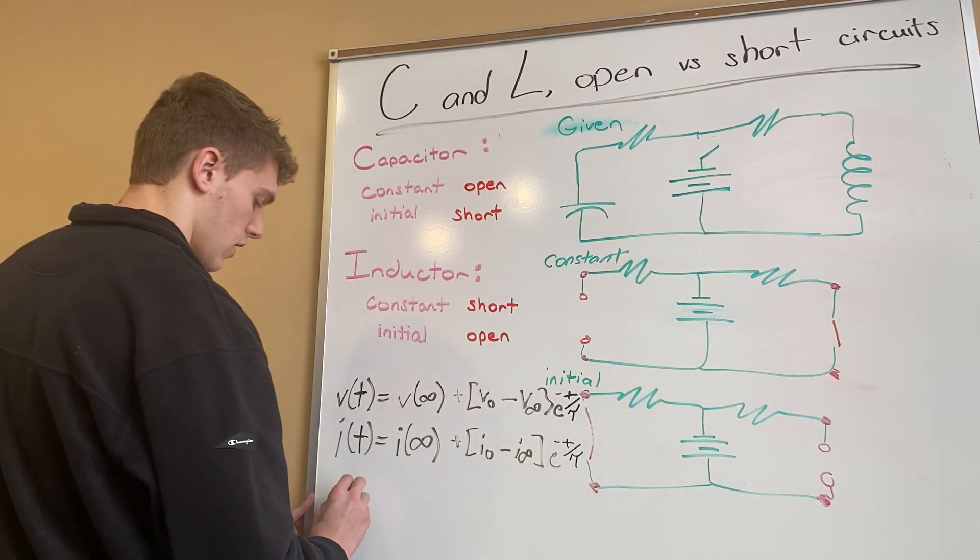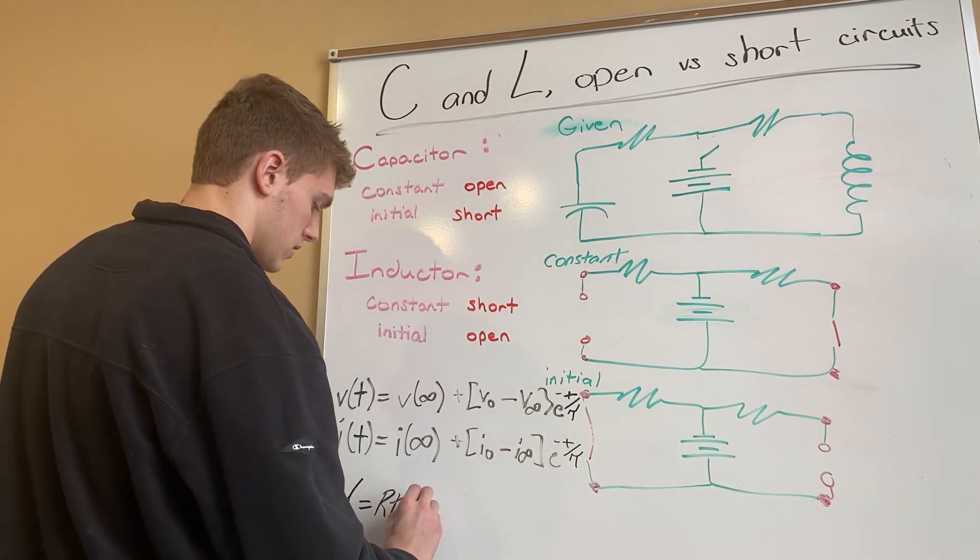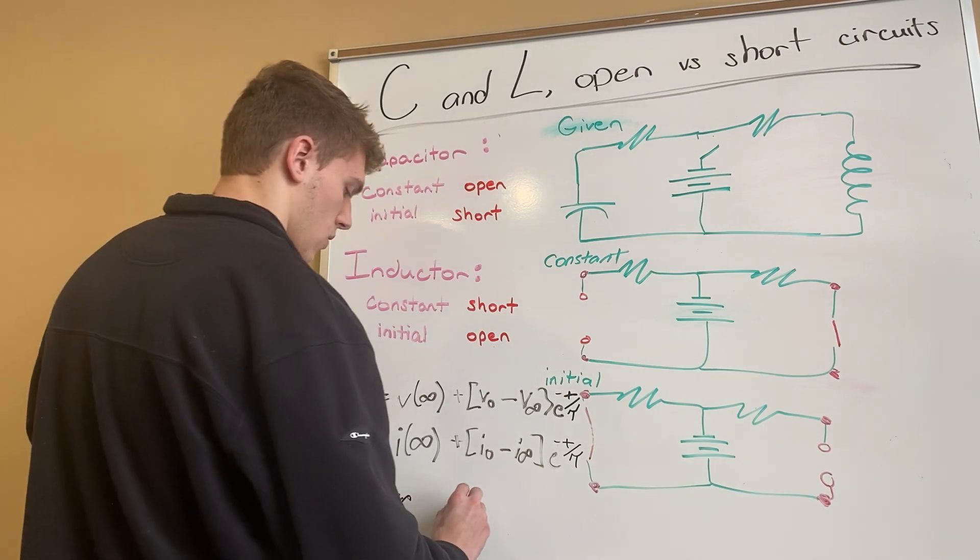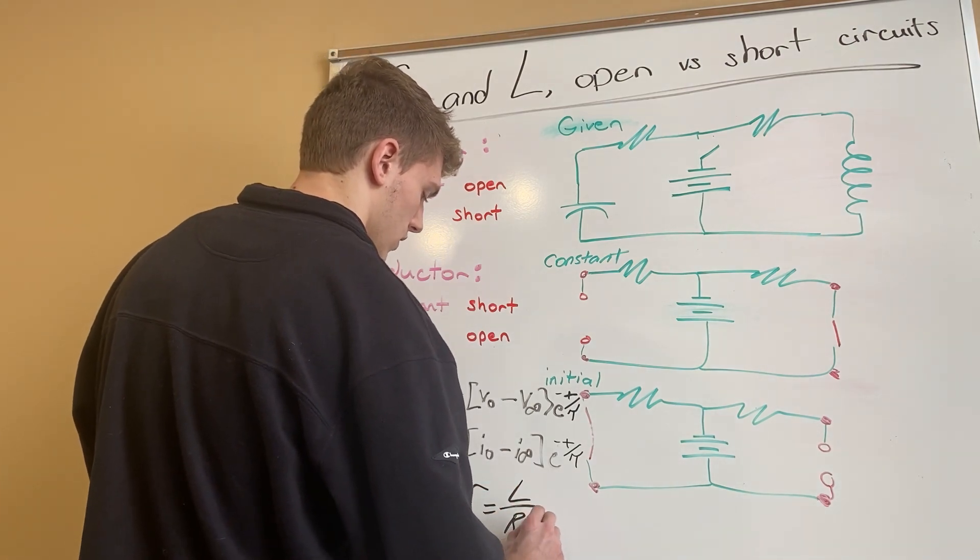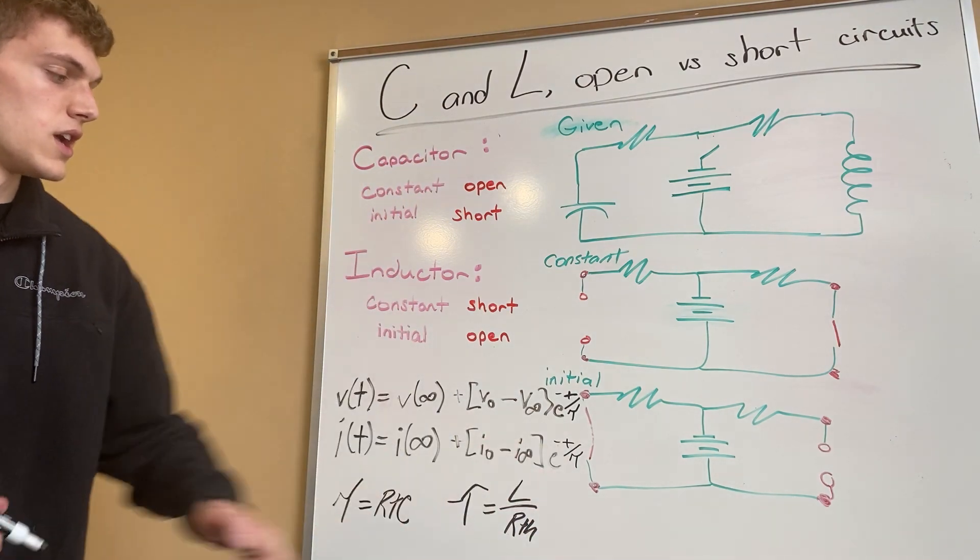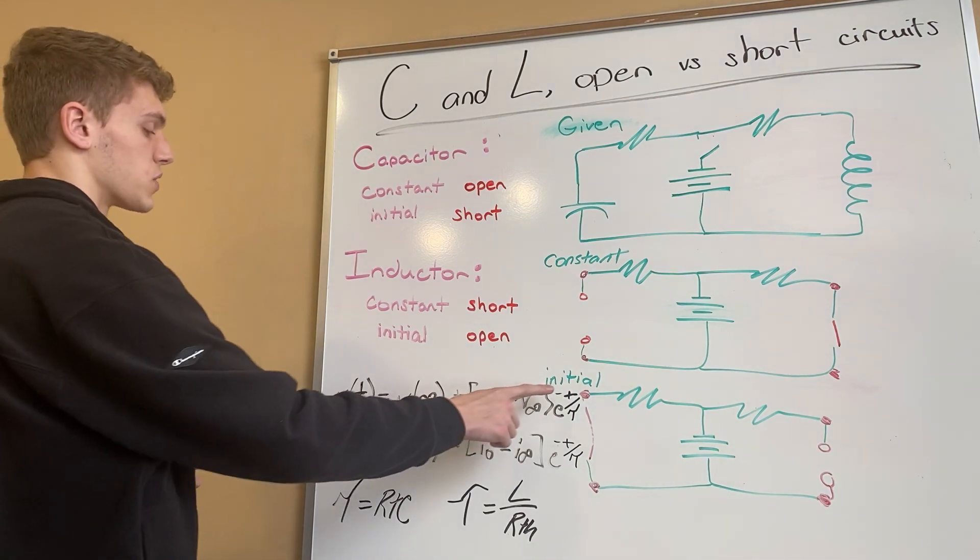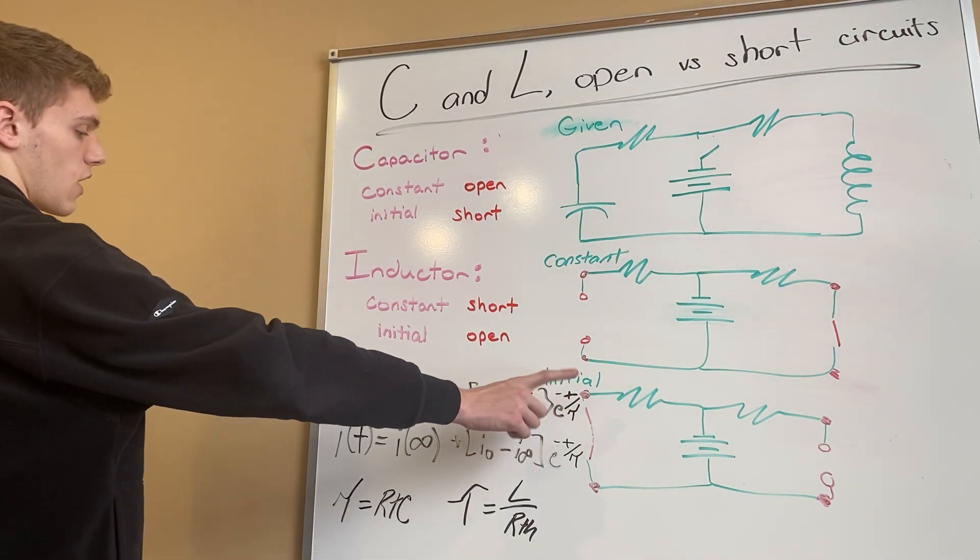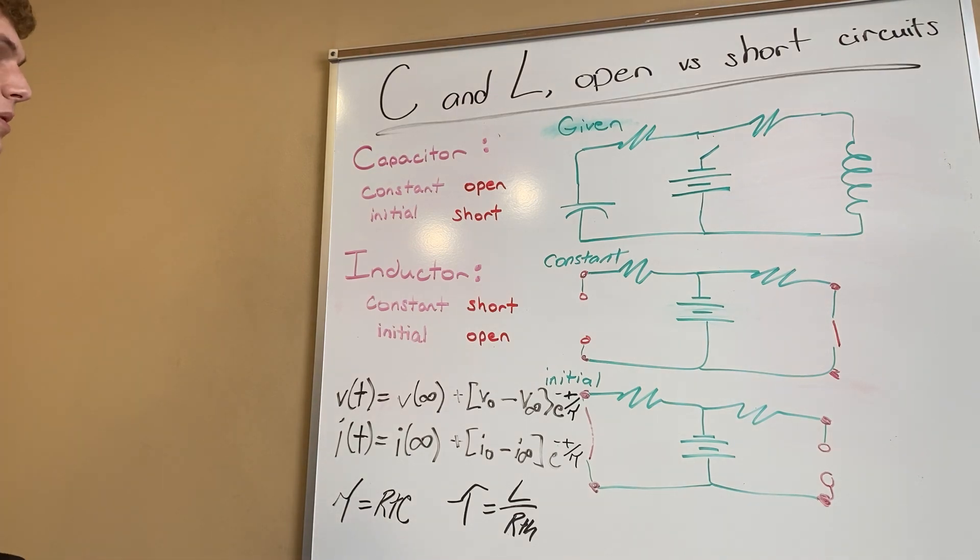Or our time constant is inductance over R Thevenin. Those are the two places where we get our T to be able to plug those in and that can help us solve most of the time we're looking for the case for either our time or voltage or current at a given time to be able to solve for those.